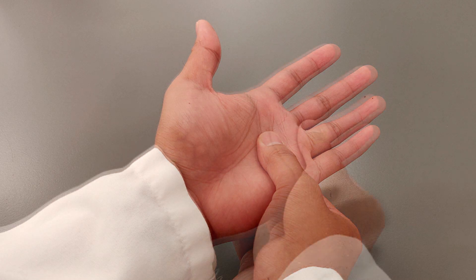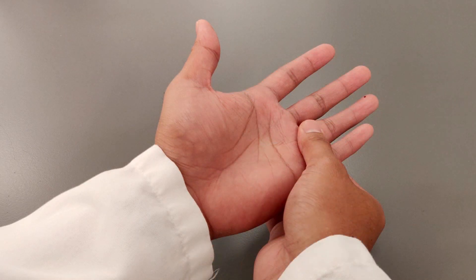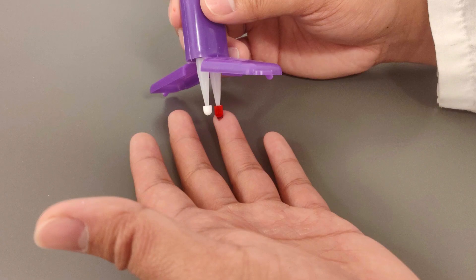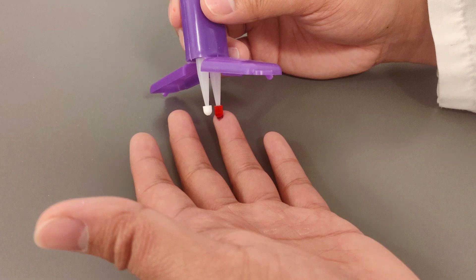When this happens, massage from the palm up towards the finger and wait for another blood drop to form. Try again until the sampler tip is fully red, count two additional seconds, and then remove.